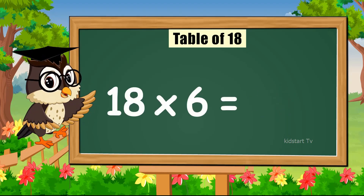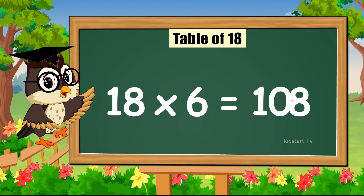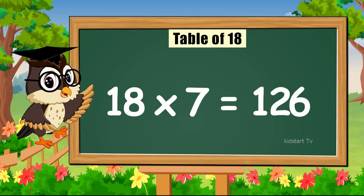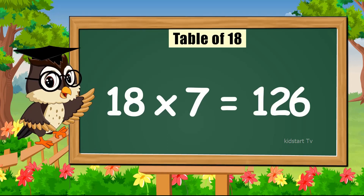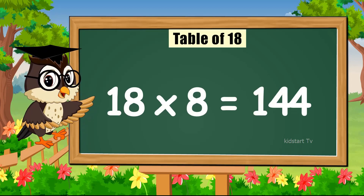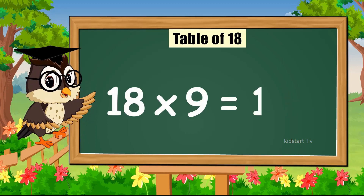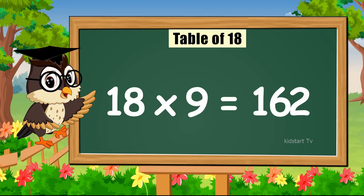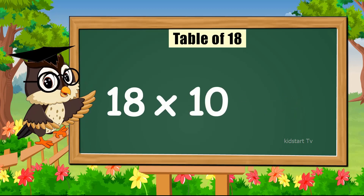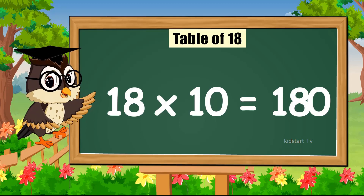Eighteen times six is a hundred and eight. Eighteen times seven is a hundred and twenty-six. Eighteen times eight is a hundred and forty-four. Eighteen times nine is a hundred and sixty-two. Eighteen times ten is a hundred and eighty.